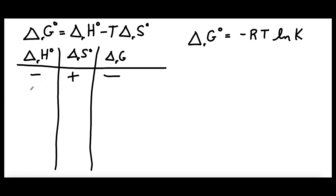And if we have the reverse scenario — an endothermic reaction that results in a decrease in entropy — we can see that if we plug in a negative delta S, multiplied by a negative T, that's going to give us a positive term. We have a positive delta H. So this is going to give us a positive delta G standard.